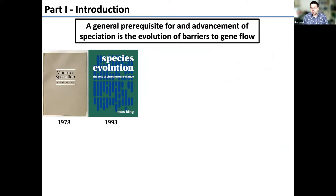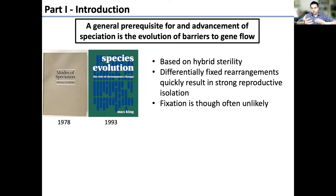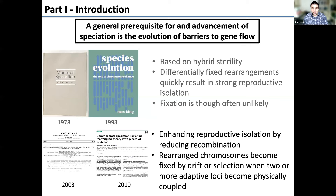Chromosomal speciation is an old theory, going back to classic books from the 1970s. The idea is that rearranged chromosomes or novel karyotypes would lead to hybrid sterility. If you have two lineages with different chromosome numbers, they produce sterile offspring. As a consequence, differentially fixed rearrangements would quickly result in strong reproductive isolation. However, fixation is often considered unlikely because if a rearranged individual mates with someone with another arrangement, the offspring is less fit.